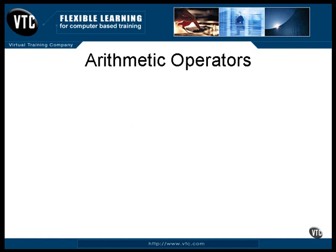There are four operators that always confuse people when they first hear of them. They're part of the stuff that Java inherited from C, and some people don't like them. If you don't like them, don't use them. But you need to know what they are and how they work. All they do is either add one to a variable or subtract one from a variable. The following two statements each add one to the variable X, and these two statements subtract one from the variable X. The first two are called the pre-increment and post-increment operators. The second two are the pre-decrement and post-decrement operators.